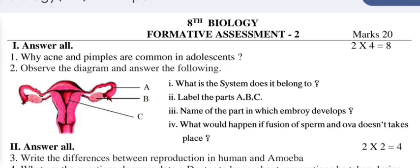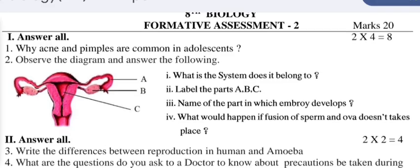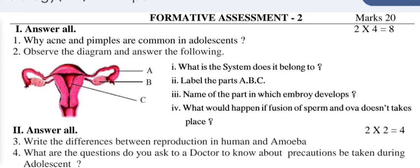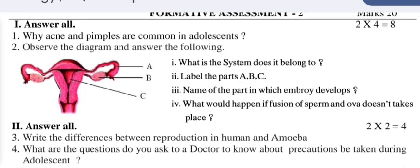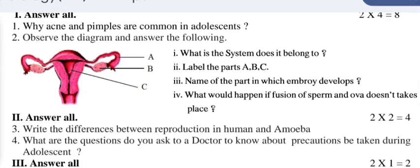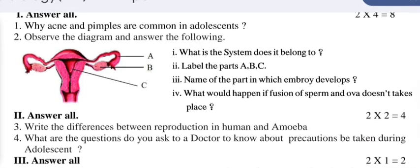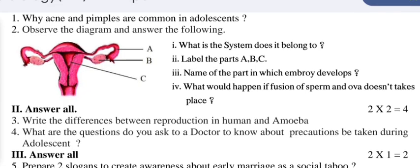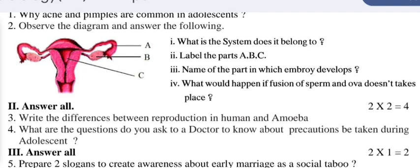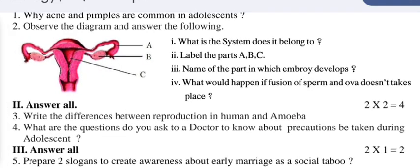The questions are: Answer all. Number one: Why are acne and pimples common in adolescence? Number two: Observe the diagram and answer the following — A, B, C are the parts identified. What is the system it belongs to? Label the parts A, B, C. Name the part in which the embryo develops.